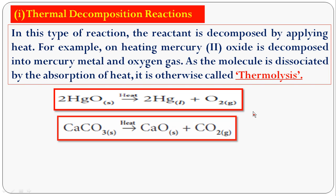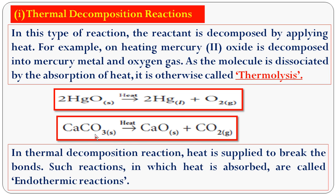HgO, mercury(II) oxide: when you apply heat, it splits into mercury and oxygen. When calcium carbonate (CaCO₃) is heated, it forms calcium oxide (CaO) and carbon dioxide (CO₂) — a compound decomposing into two compounds. In thermal decomposition, heat is supplied to break the bonds. Such reactions in which heat is absorbed are called endothermic reactions.